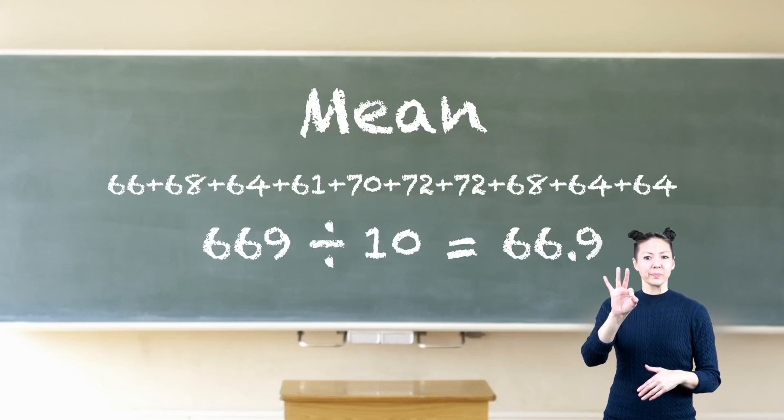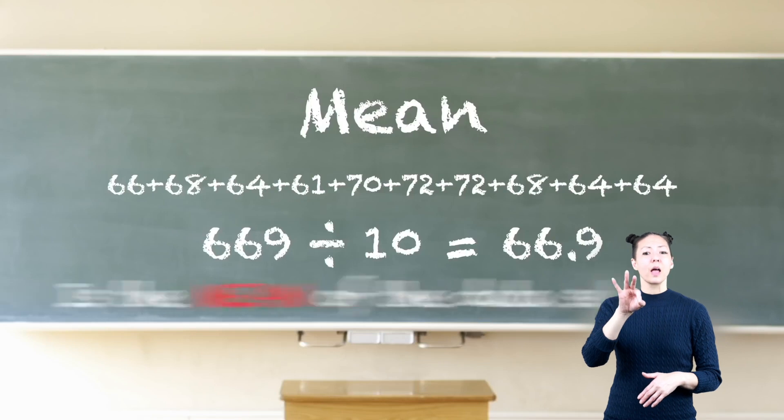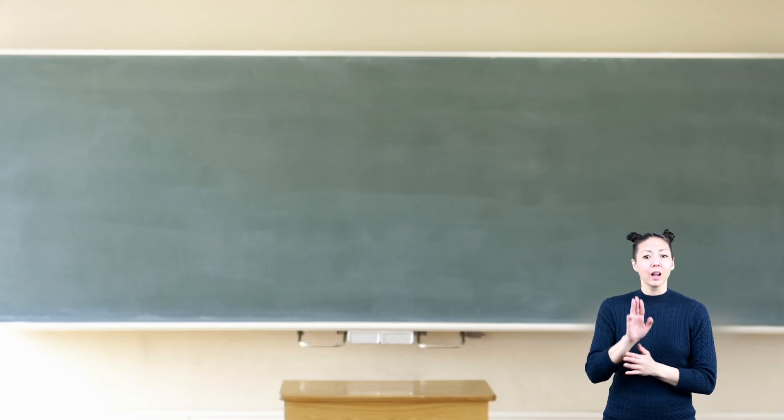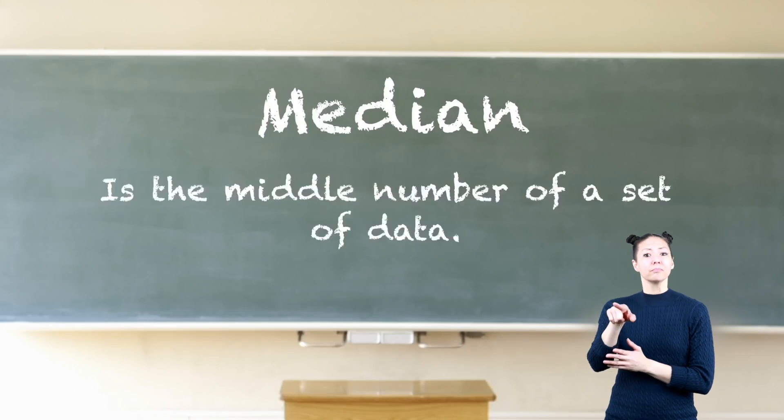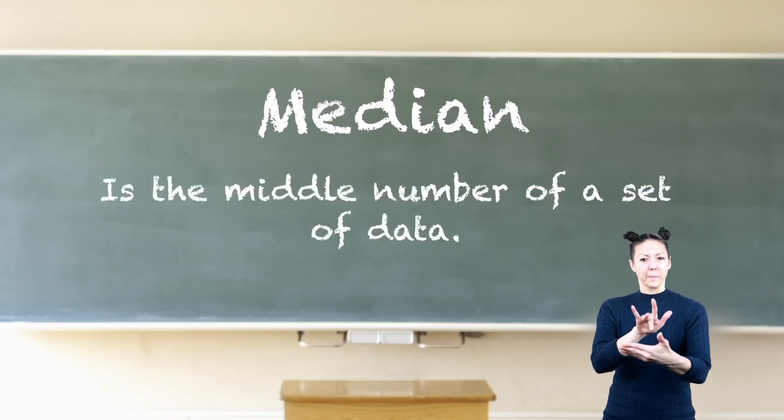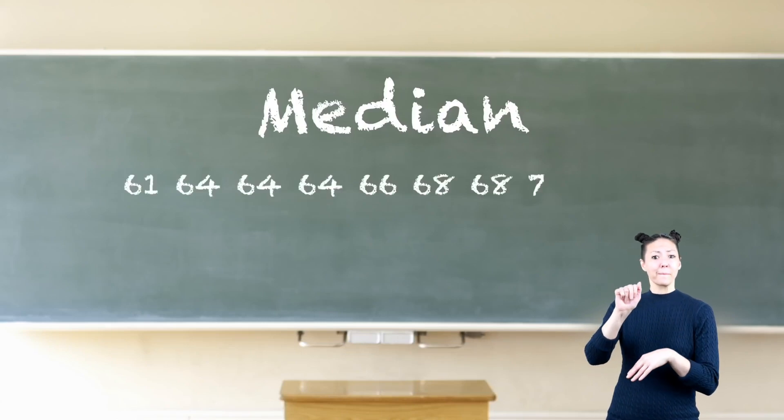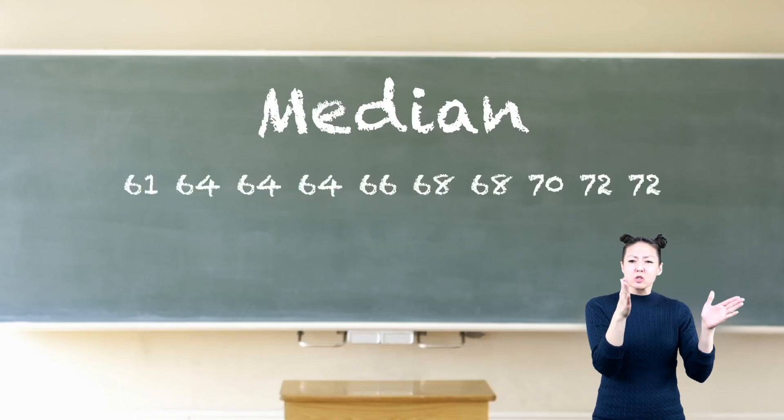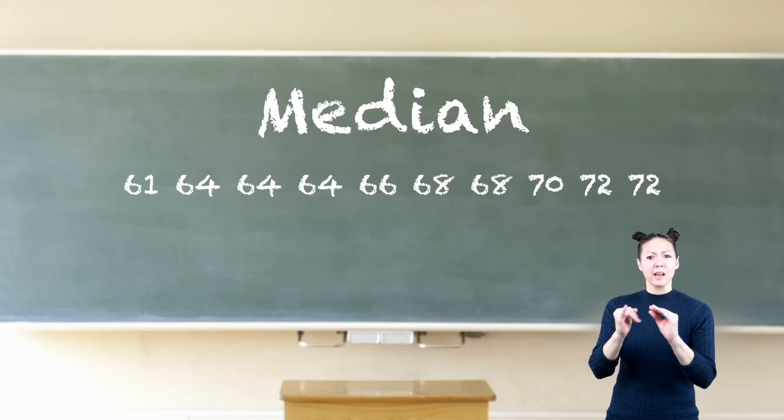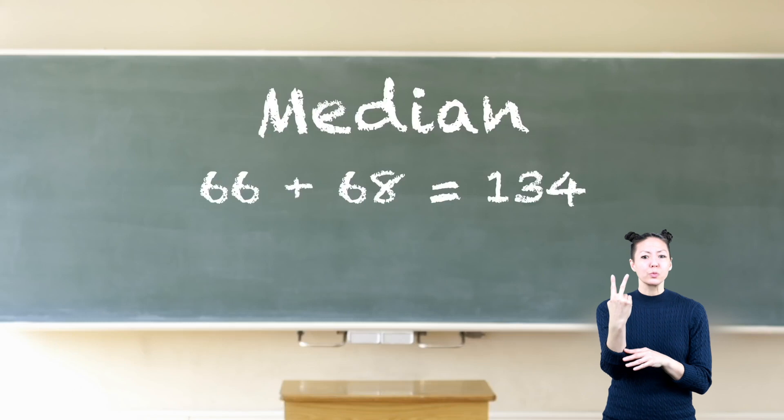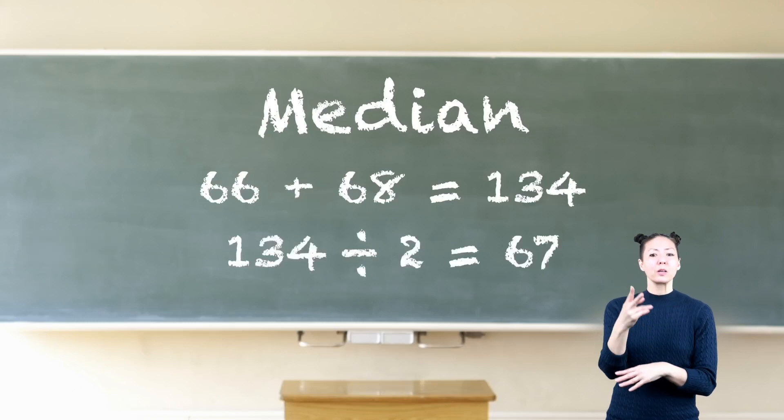Median: the median of a set of data is the middle number of a set of data. To find the median, align the data from the smallest to the largest. If the quantity of numbers is even, add the two middle numbers together and then divide by two. 134 divided by two equals 67, so 67 is the median.